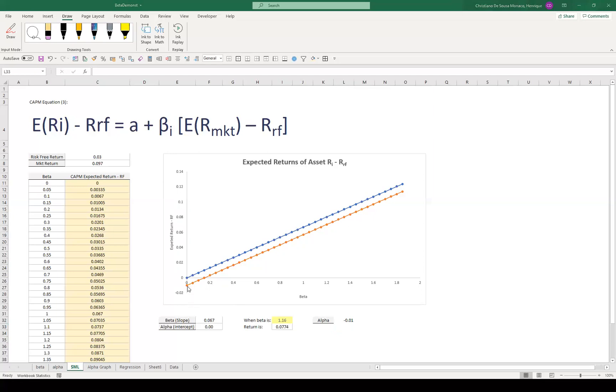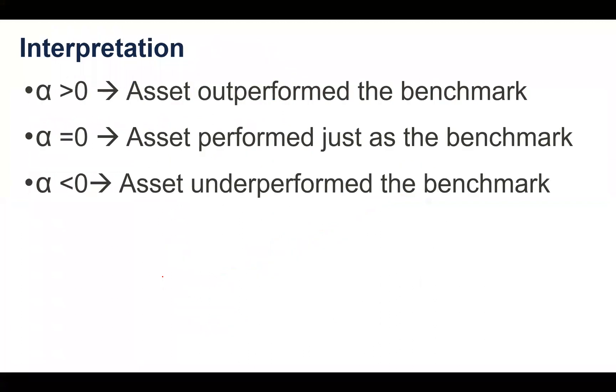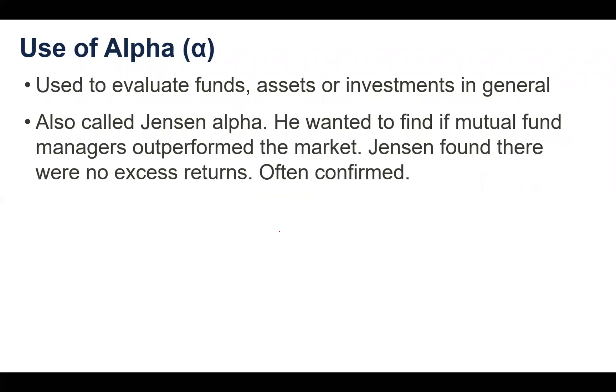If we go back to the slide here, the interpretation of alpha is actually very easy. Greater than zero, if you think on the linear regression, means that this asset outperformed the benchmark. Equals zero, it was just exactly as, in this case here, CAPM predicted, or beta predicted. If it's less than zero, it means that it underperformed the benchmark.